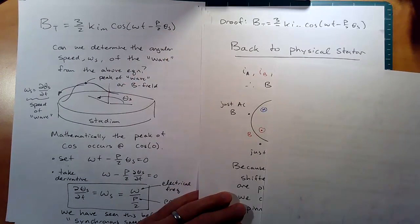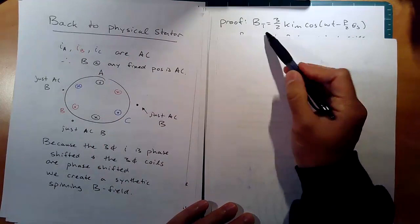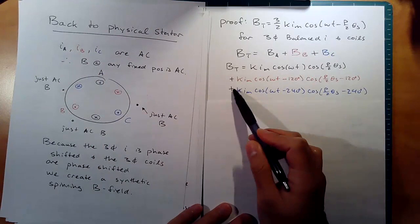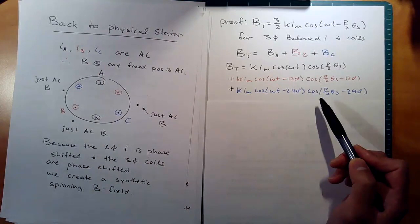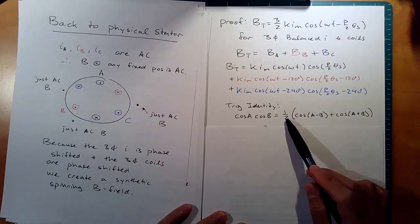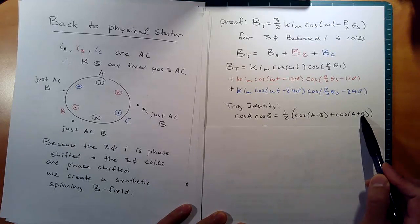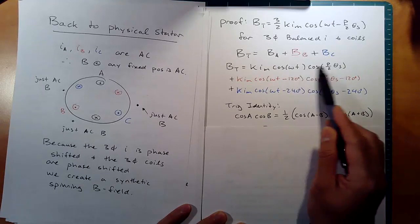The last thing — you can stop the video here if you want — is the proof of how we get to B_total = (3/2) * K * I_m * cos(ωt - p/2 * θ_s). We had B_total as the sum of the three coil contributions. We can pull in a trig identity: the product of two cosines equals one half times the cosine of the difference of the arguments plus the cosine of the sum of the arguments. We apply this identity three times, once for each phase A, B, and C.